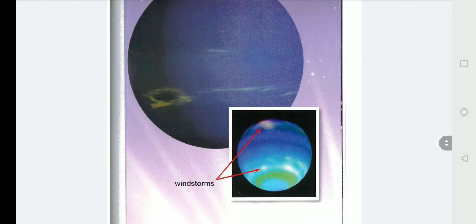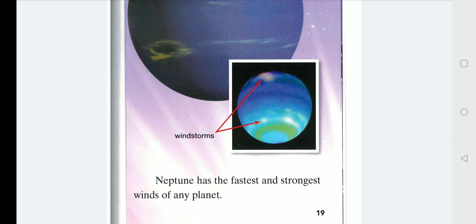Neptune. Neptune has the fastest and strongest winds of any planet. Do you remember the typhoons we have had in Hong Kong? Neptune has typhoons a million times stronger.